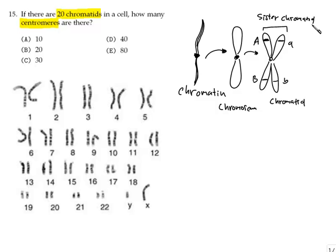If you want to know whether something is one chromosome or not, look at the middle part — the name for that is the centromere.